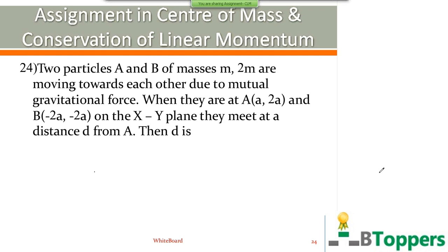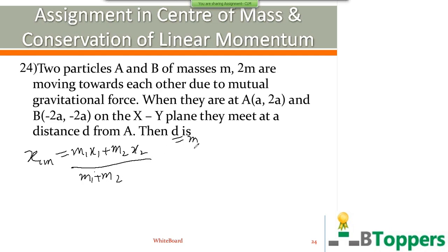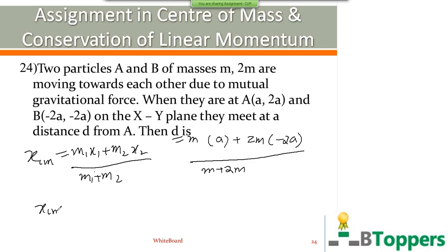Therefore you have to find the position of the center of mass of the two particles, or the distance of the position of the center of mass from the first particle. So X coordinate of the center of mass equals M1*X1 plus M2*X2 divided by M1 plus M2. Here M1 equals M, X1 equals a, M2 is 2M, X2 is -2a. Simplifying, you get X coordinate of center of mass equals -a.